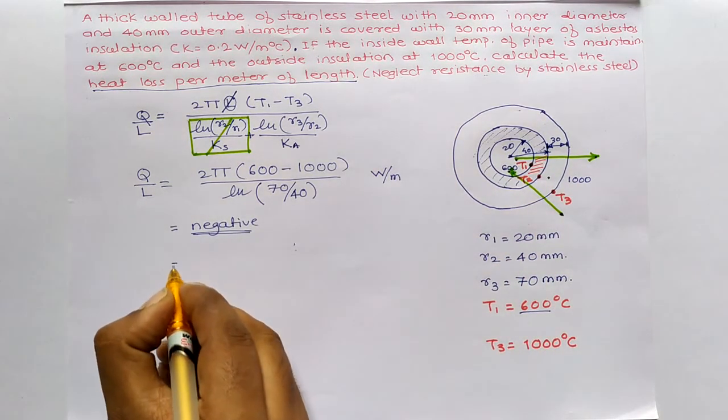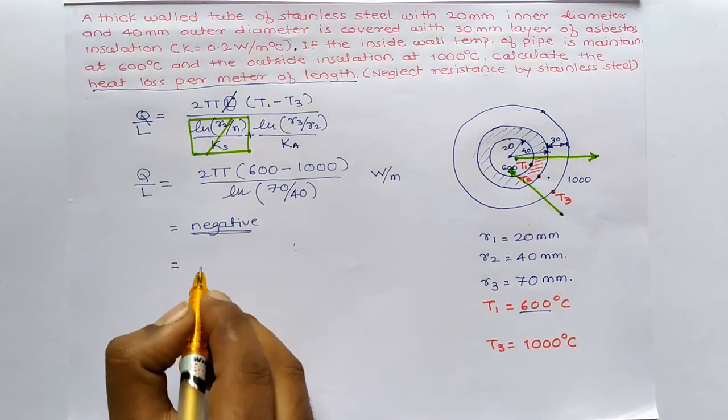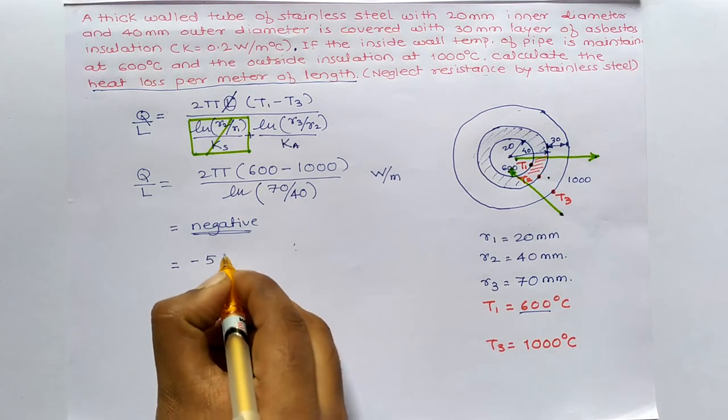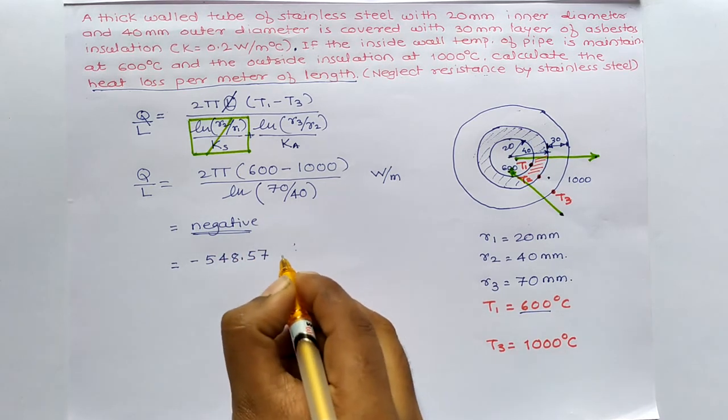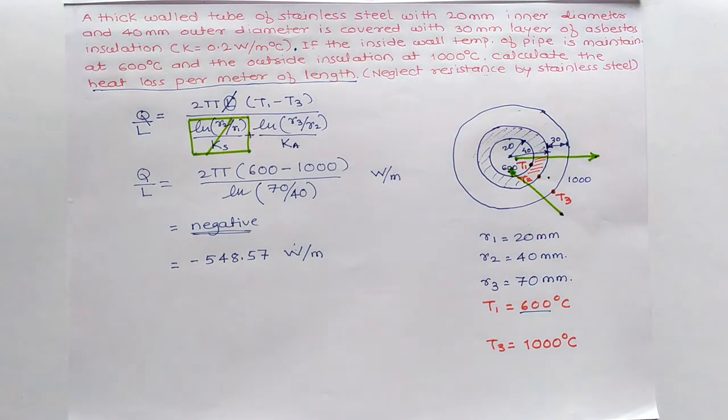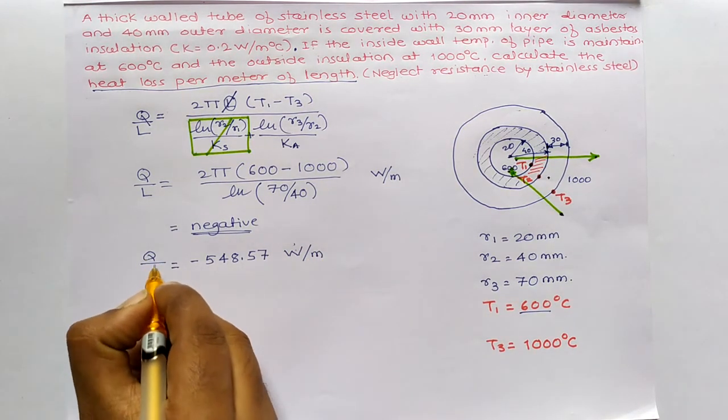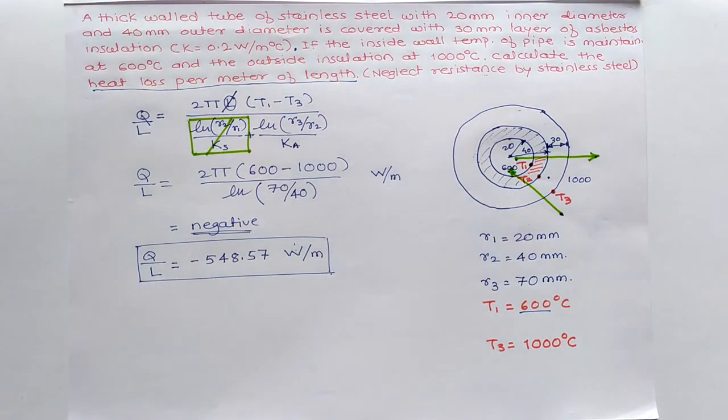So, your answer is of, I will check this, minus 548.57 in Watt per meter. This will be the answer. Hope you understand this and try to connect, try to solve this example initially.